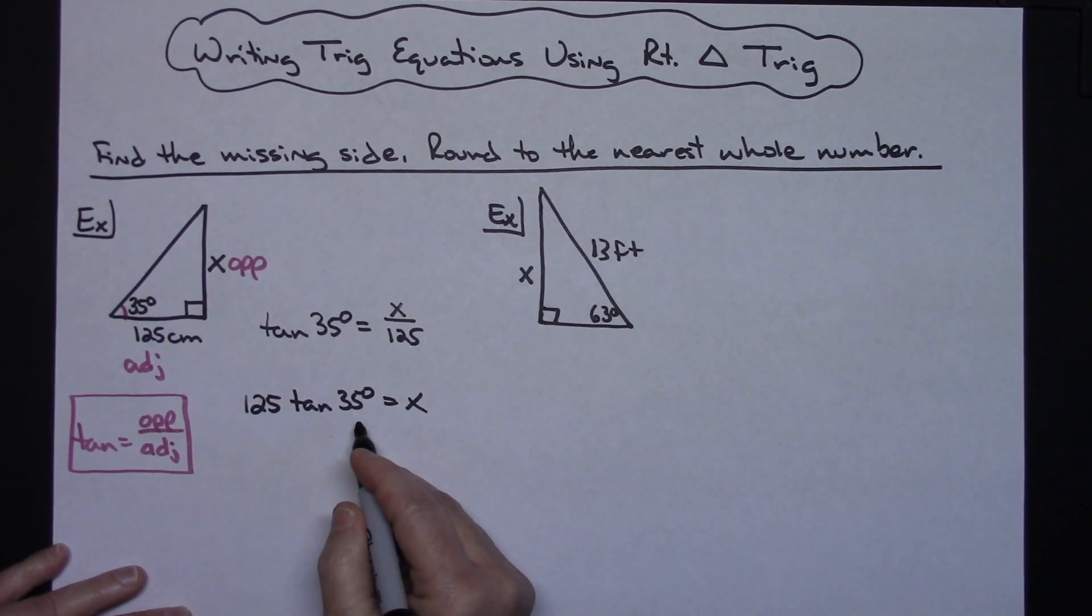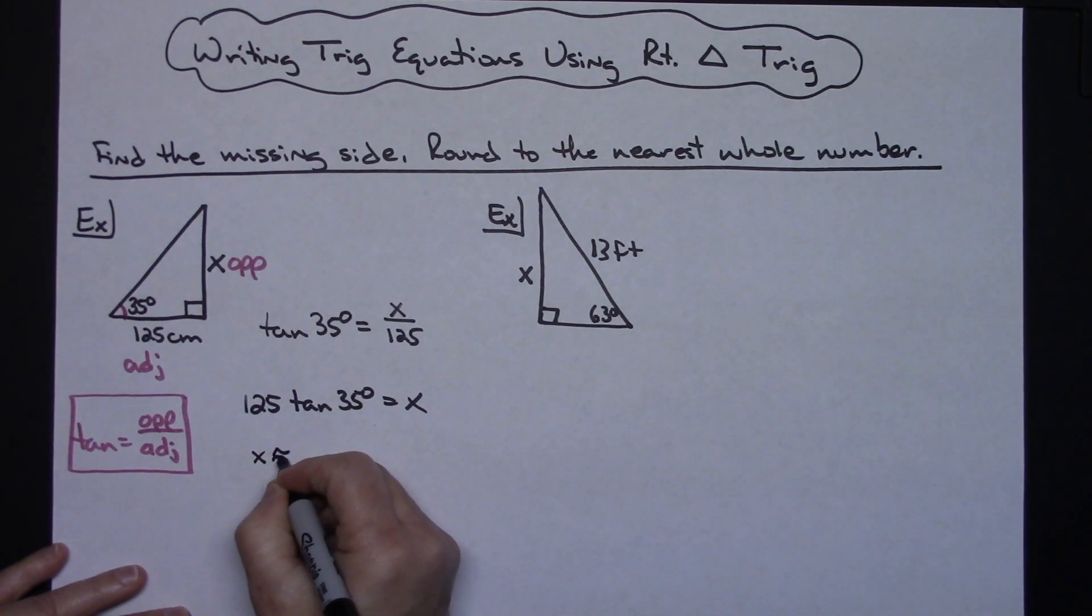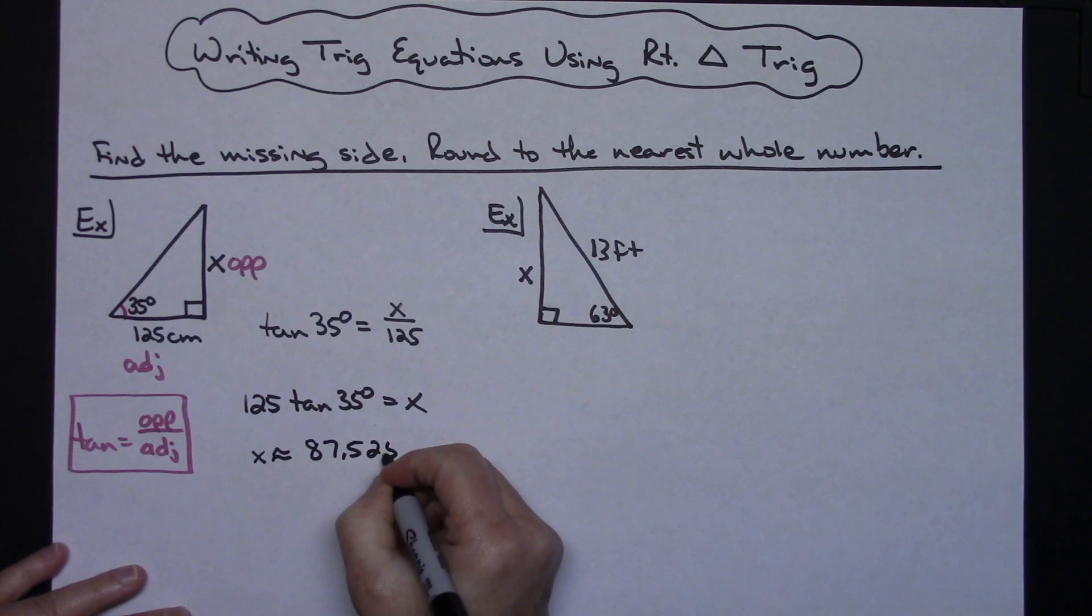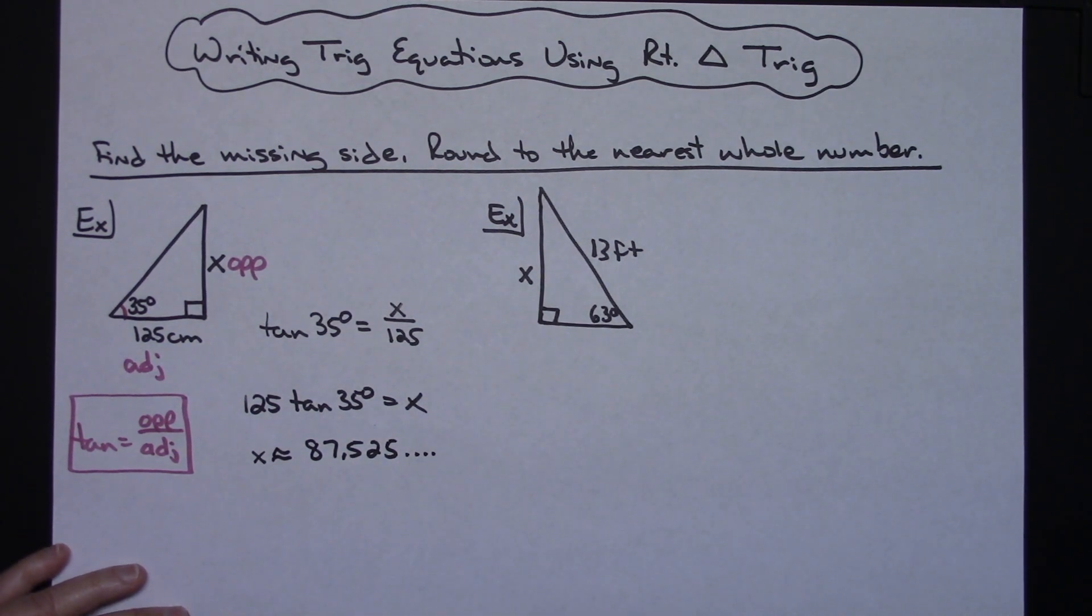Now I can plug this in the calculator. When I do tangent of 35 degrees, it's going to be a really long decimal, and I want to leave that whole decimal in there when I multiply by 125. You should get a decimal that looks about like 87.525 and continues on forever.